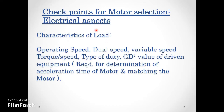From an electrical aspect, key checkpoints for motor selection include: load characteristics such as operating speed, dual speed, variable speed, torque-speed characteristics, and duty type. GD² (moment of inertia) of the driven equipment is required to determine motor acceleration time — how long the motor takes to reach full load speed — which is essential for matching the motor to the driven equipment.